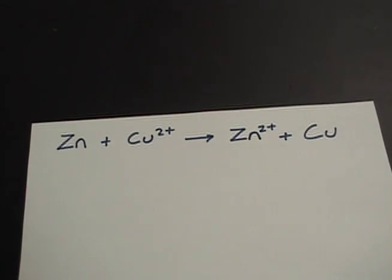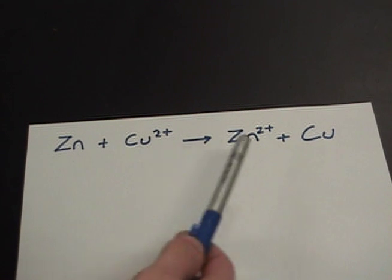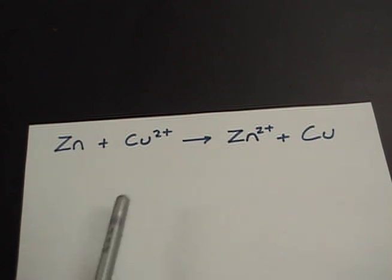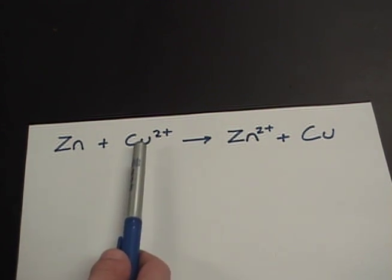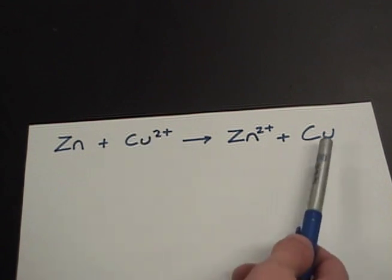Let me show you an example of oxidation and reduction in a chemical equation. In this example, we have a redox reaction between zinc and copper. We see that the zinc goes from zinc by itself to zinc 2 positive, and copper goes from copper 2 positive to plain old copper.